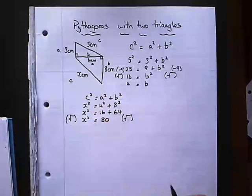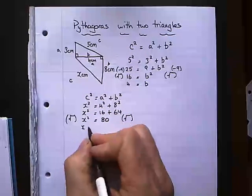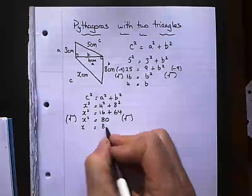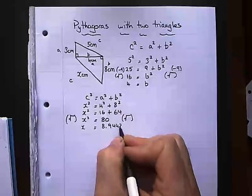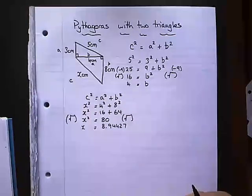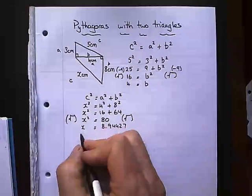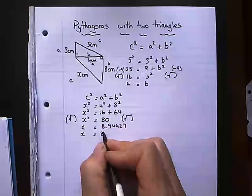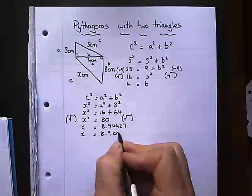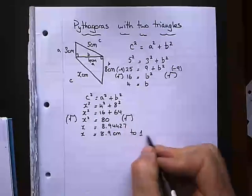So we'd square root in both sides. We get X equals 8.94427. And to make this look nicer, I'm just going to round it to one decimal place. 8.9 centimeters to one decimal place.